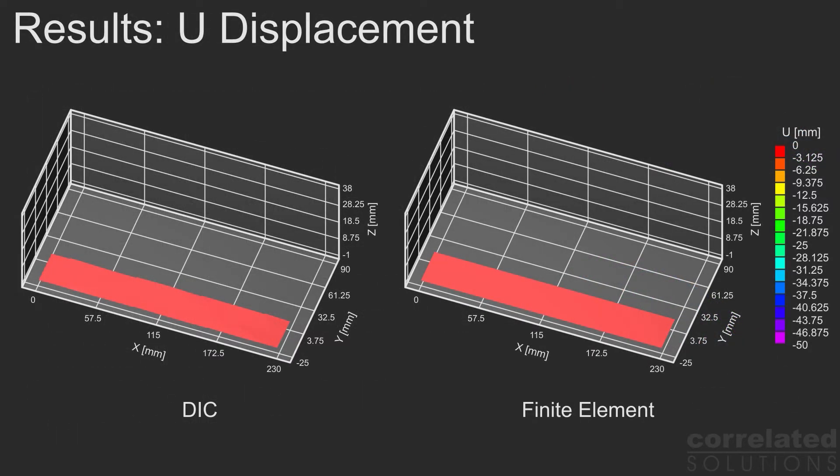The color contours seen in the two plots represent the displacement fields. Both plots use the same scale. The plot on the left shows the DIC measurements, and the plot on the right shows the finite element predictions.